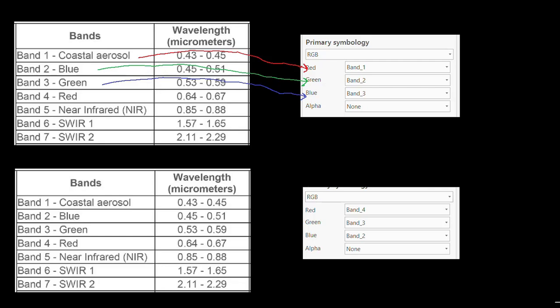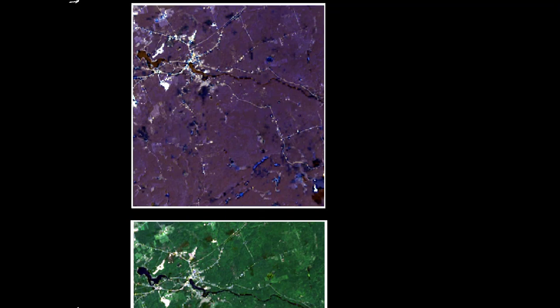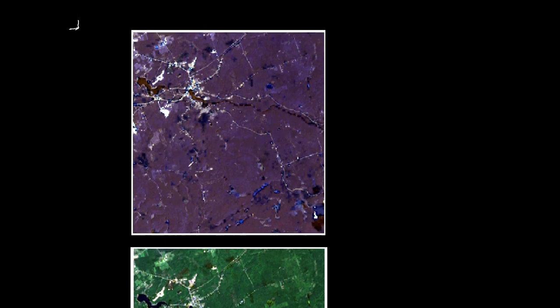So let's have a look and see what that looks like as an image. This is what that would look like: the red display channel being driven by coastal blue, the green display channel being driven by what we would traditionally call blue, and the blue display channel being driven by what we would call green. You get this sort of dark purplish blue coloration of the image.